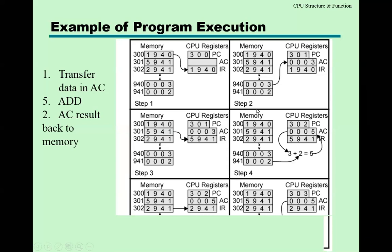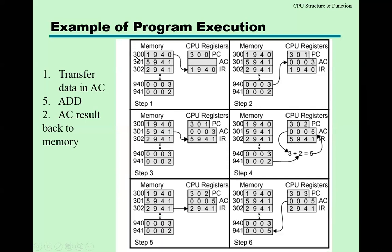So transfer data into the accumulator: at memory address 300, the instruction is loaded into the instruction register and executed. The opcode 1 means transfer data into the accumulator, so at location 940, there is data — 0003 — which will be loaded into the accumulator. In step two, you can see the data loaded into the accumulator. As soon as the instruction executes, the PC is incremented by one, so 300 becomes 301.